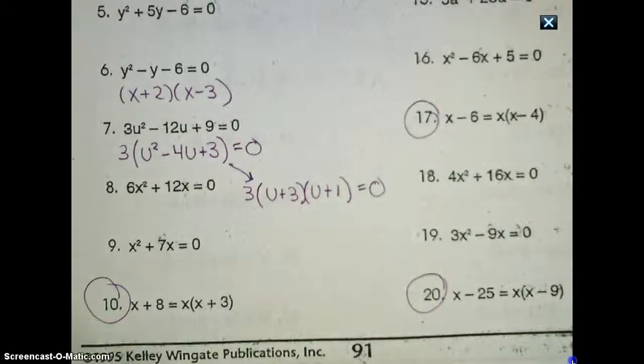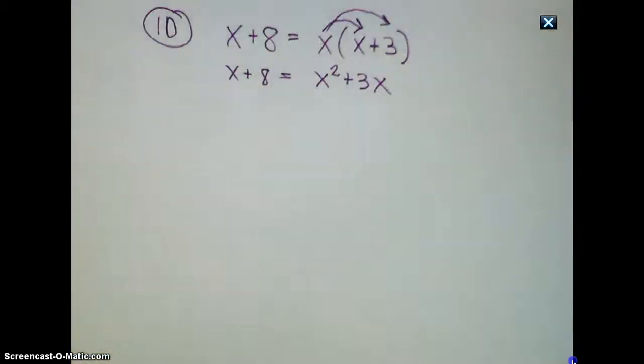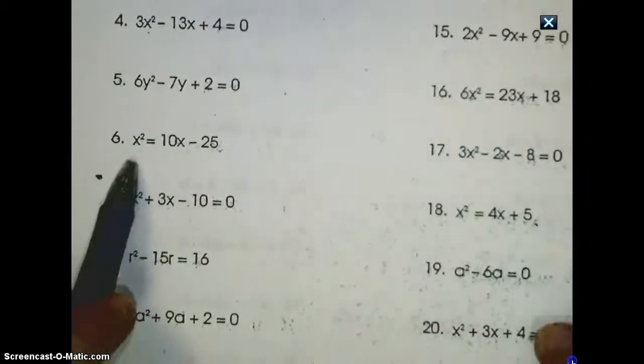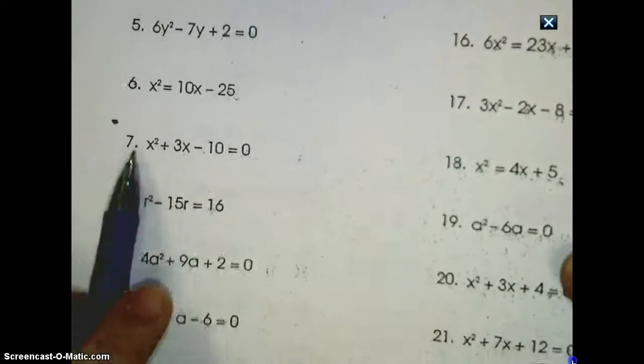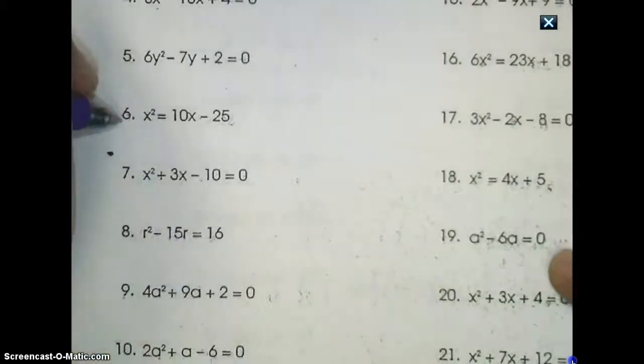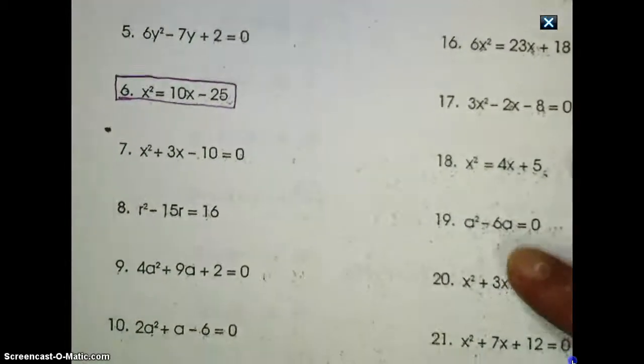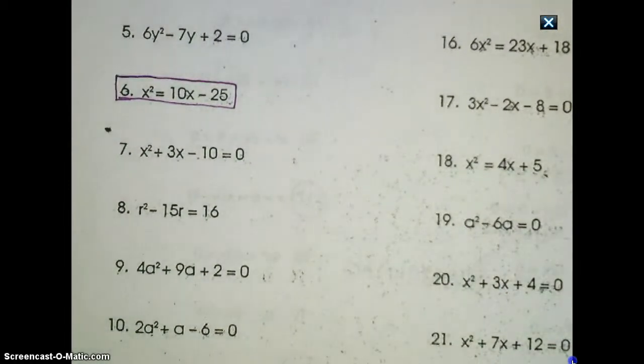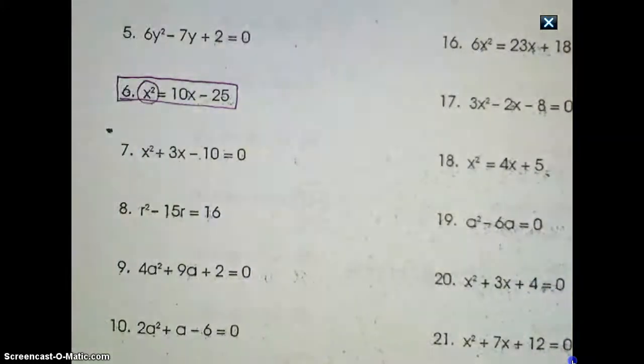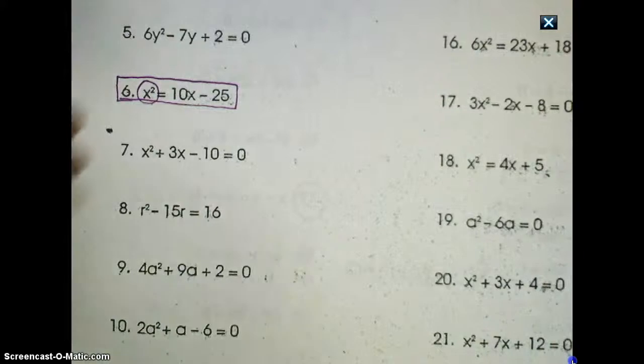We're going to take a look at one last problem, and that's going to be on the back of this worksheet, and that's going to be problem number six. So on the back side here, x squared equals 10x minus 25. The problem with this that's different than all the other examples I've gone over with you on this video is that everything is not on the same side of the equation. I have x squared on the left side and 10x minus 25 on the right. In order to successfully use this strategy of solving equations through factoring, I need everything to be on the same side and my equation to be equal to zero.